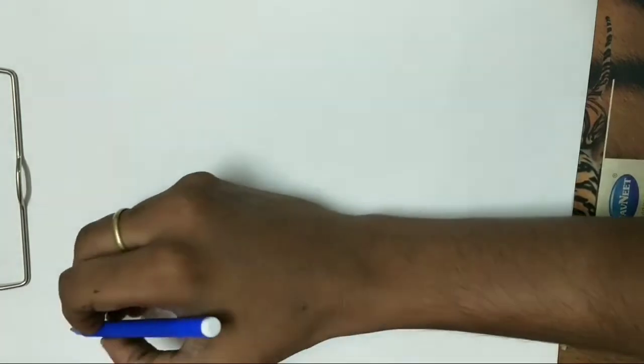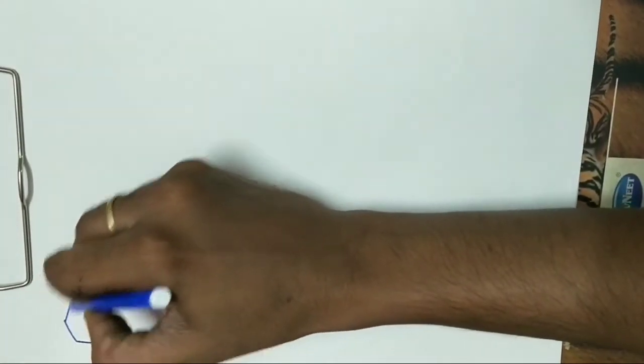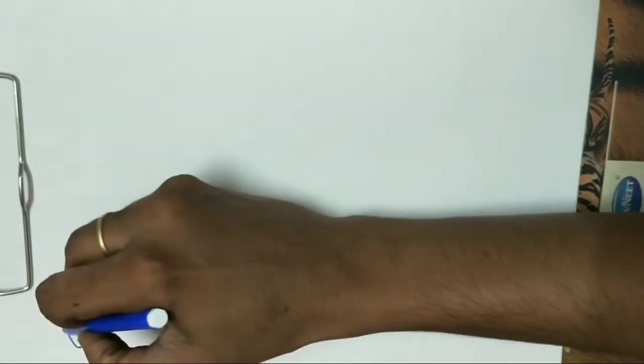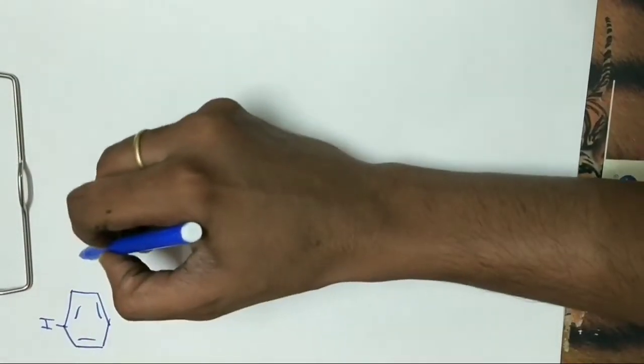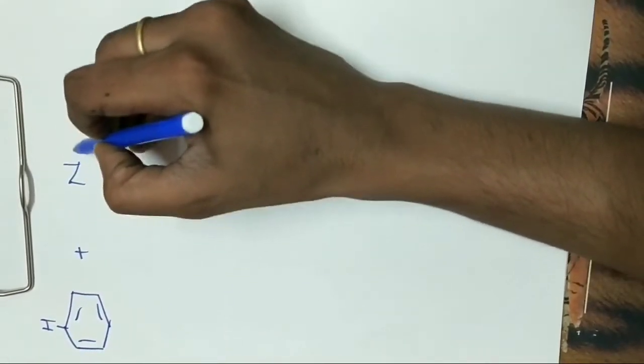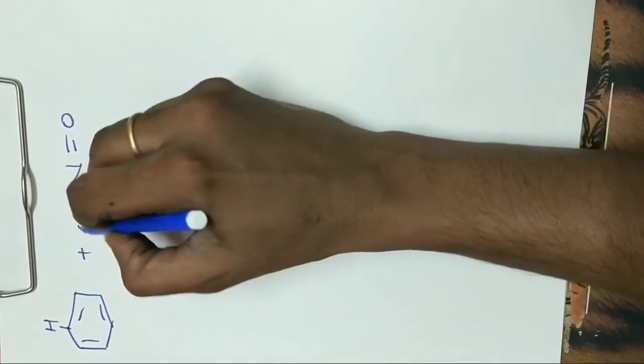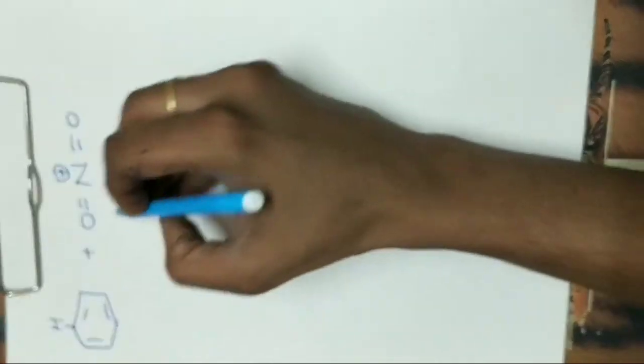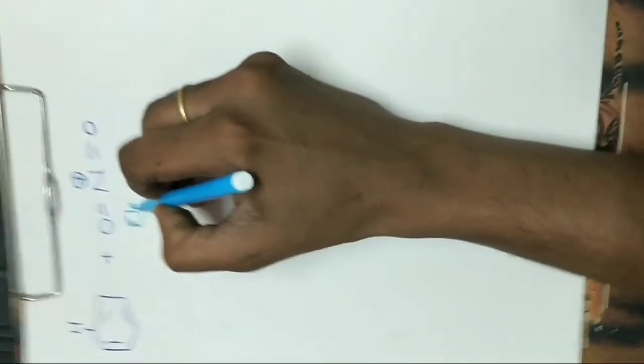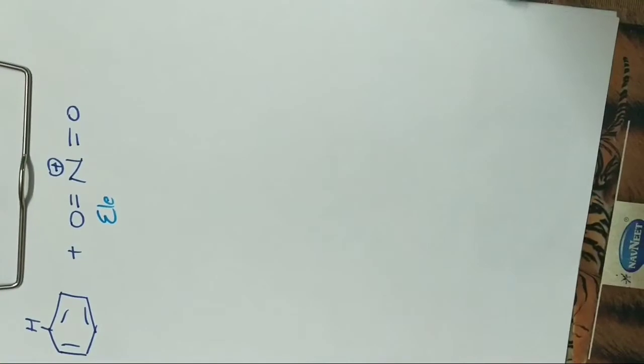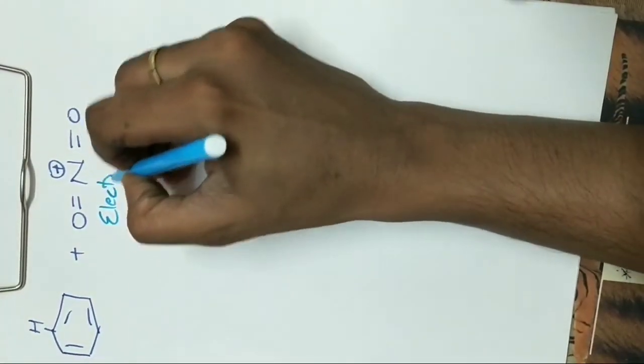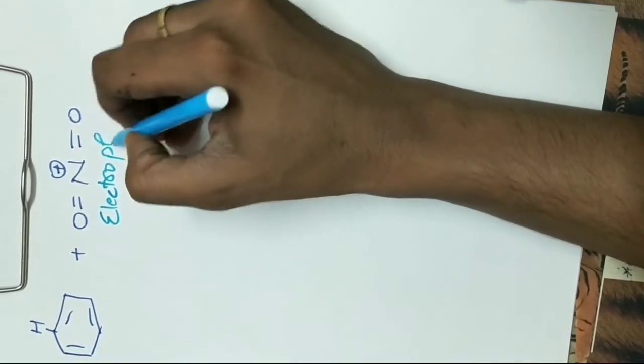Now benzene reacts with the nitronium ion. This is the benzene ring. The nitronium ion is an electrophile.